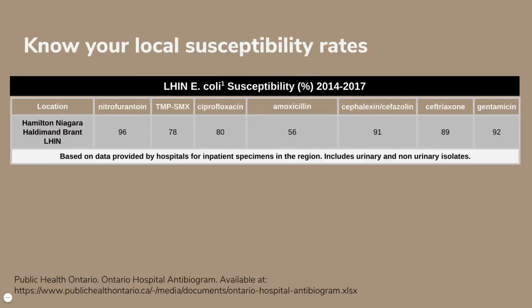These treatment recommendations are based on local susceptibility rates within the Hamilton, Haldimand, Niagara region, which will differ slightly from place to place. The most common pathogen for UTIs is E. coli. The E. coli susceptibility rates show why nitrofurantoin would be a good empiric choice before you know the susceptibility for your particular patient. On the other hand, amoxicillin would not be a great choice at only 56% susceptibility — we would not use amoxicillin unless culture and susceptibility results confirm it is actually susceptible.